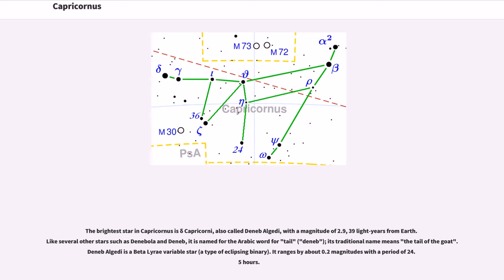The brightest star in Capricornus is Delta Capricorni, also called Deneb al-Gedi, with a magnitude of 2.9, 39 light-years from Earth. Like several other stars such as Denebola and Deneb, it is named for the Arabic word for tail. Its traditional name means the tail of the goat.